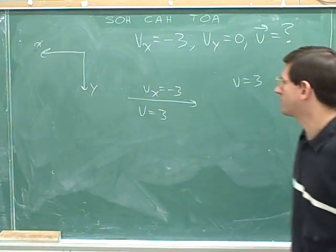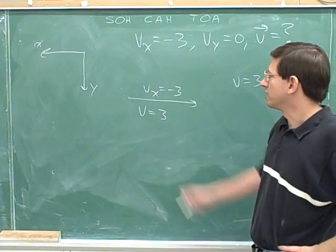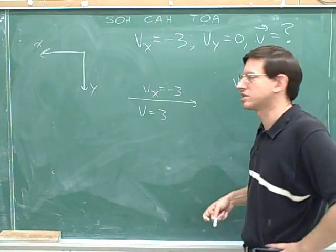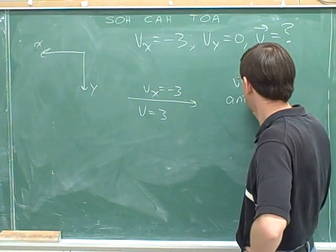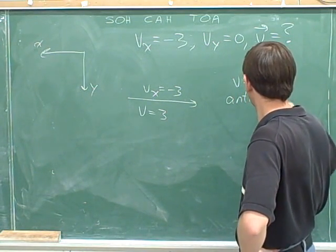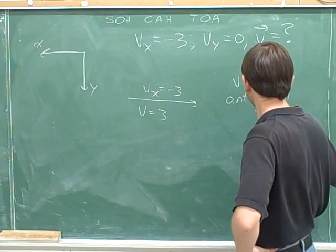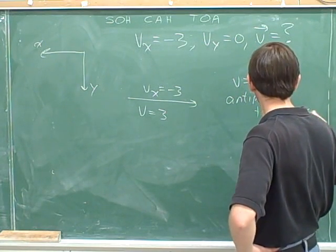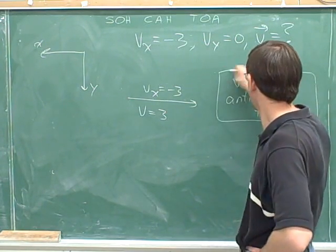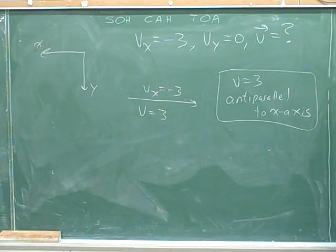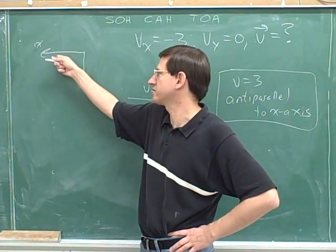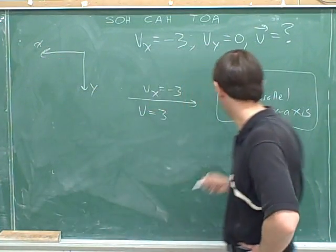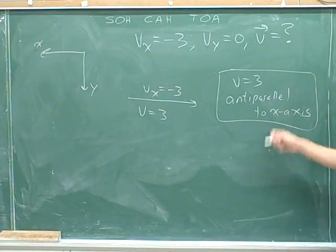And we have to indicate the direction. Since we are pointing in the negative x direction, we could say that the vector is anti-parallel to the x-axis. This is a vector with a magnitude of 3 and a direction anti-parallel to the x-axis. That would be more meaningful to your reader if they know that the positive x direction is to the left — then they know that the anti-parallel direction is to the right.